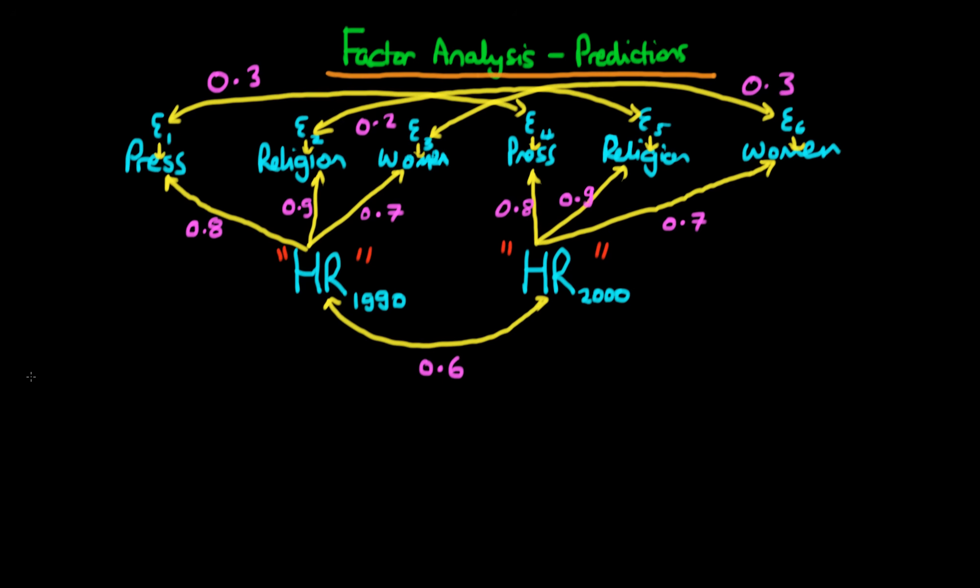So before we actually get started, let's just write down what our variance of our given indicator variables is going to be here. So Y here is going to be 6-dimensional, hence we expect that the variance of Y is going to be a 6x6 matrix. And the variance of Y is going to be given by our standard thing, lambda, our weight matrix, times phi, which is the covariance matrix for the factors, times lambda transposed, plus the matrix of the error variances and covariances.